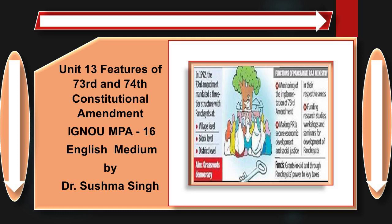Article 243B provided for the creation of a three-tier structure of Panchayats at the village, block, and district levels. Further, Article 243E provided for a fixed tenure of five years for these local bodies. Legislatures of all states in which the acts apply have, in consonance with the provisions of the two acts, created the necessary structures in urban and rural areas and are holding regular elections to them. This shows that the 73rd and 74th Constitutional Amendment Acts satisfy the essential prerequisite of creating regular bodies.